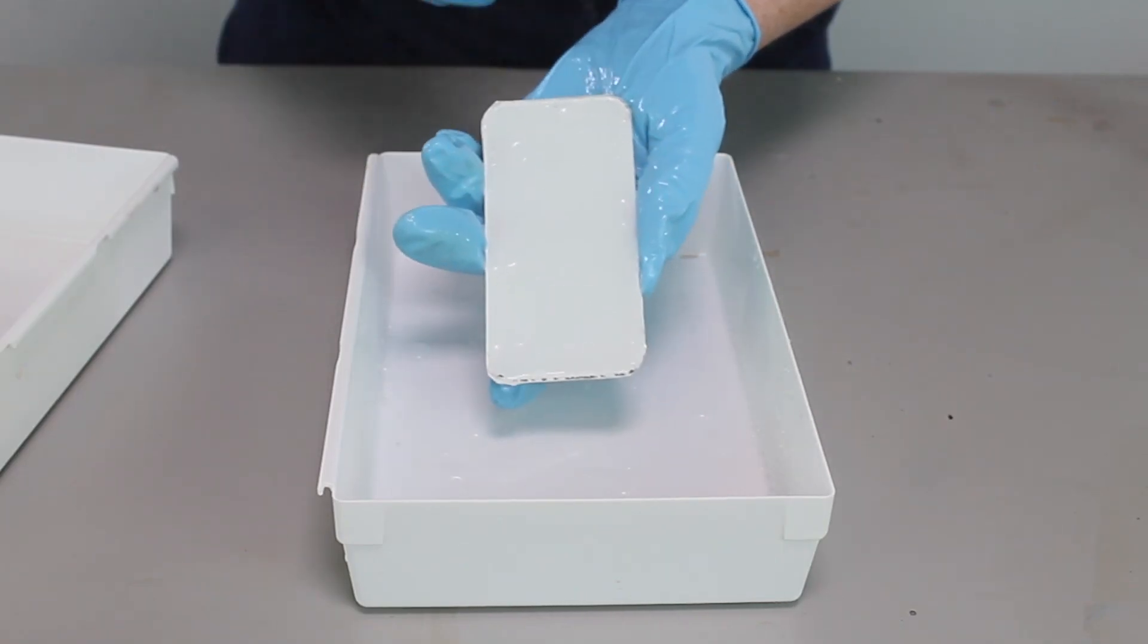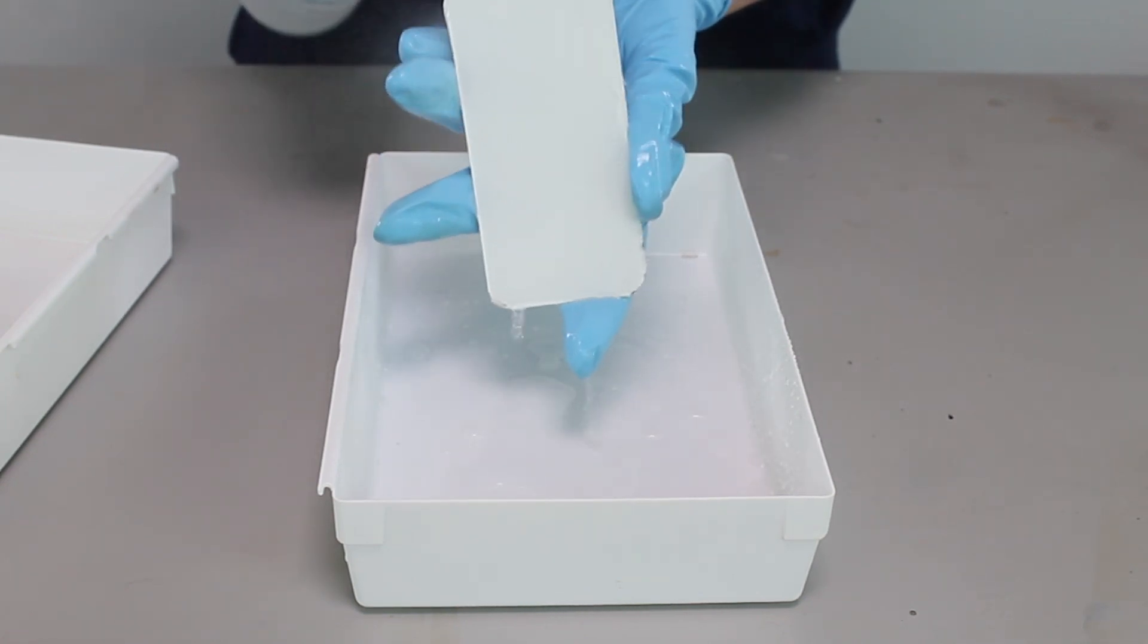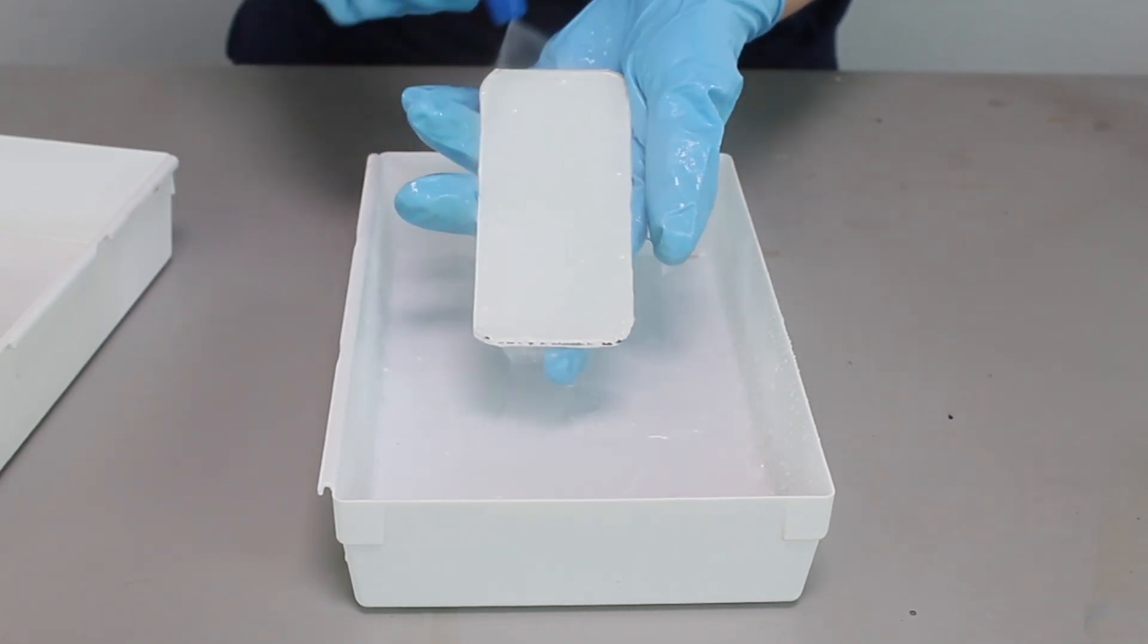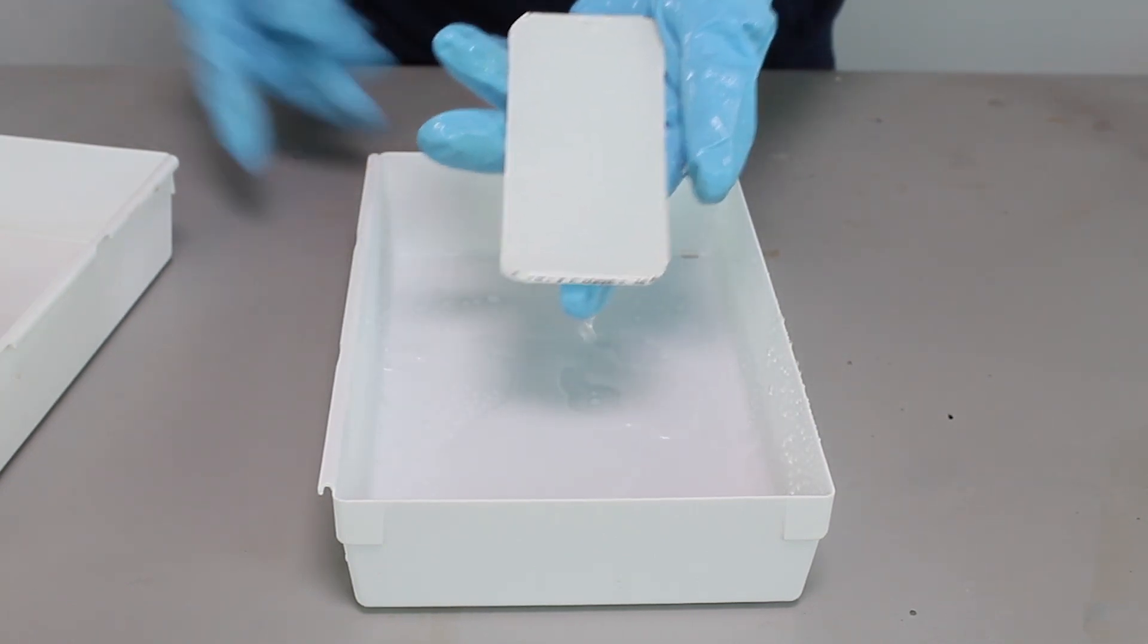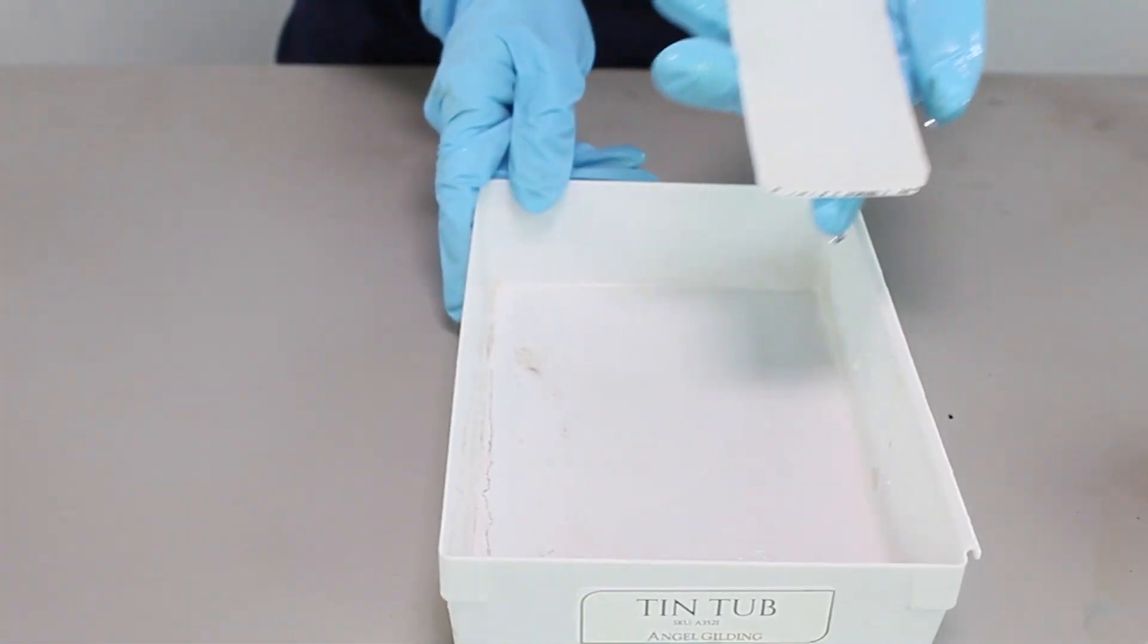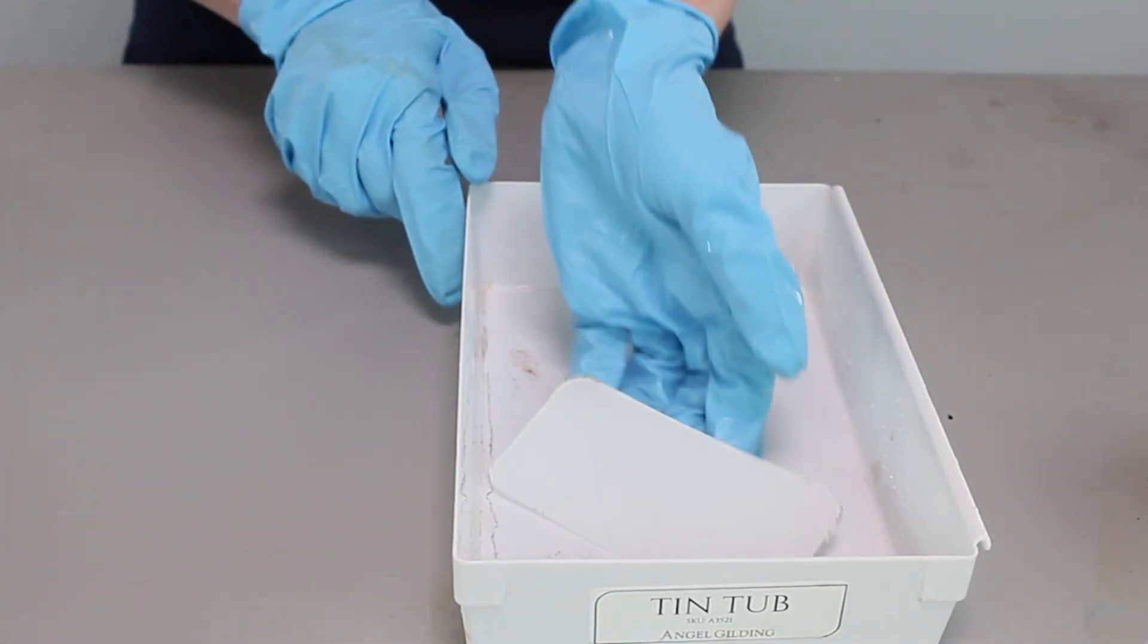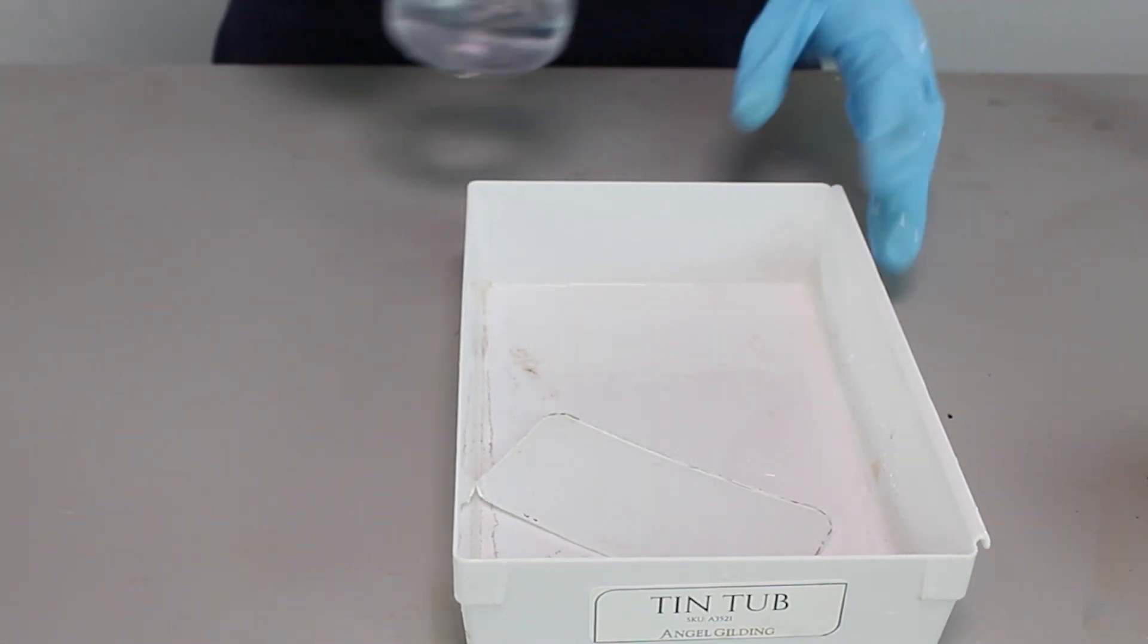Now I'm moving on to the actual silvering process. First off, rinsing it really well. As you recall, I cleaned the piece really well. Now I'm rinsing it with the distilled water. Once again, distilled water throughout. Now I'm using my tin tub. This kit comes with three specific tubs. First, you saw the rinse tub. Now we've got the tin tub.